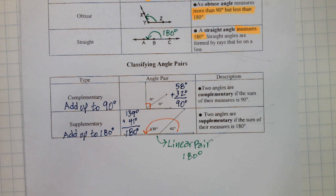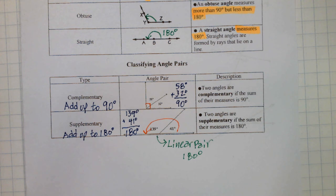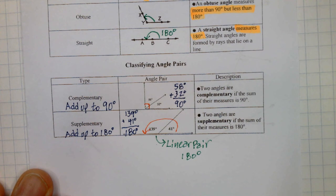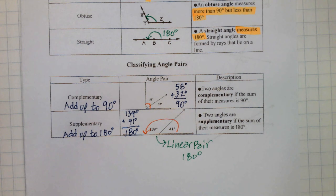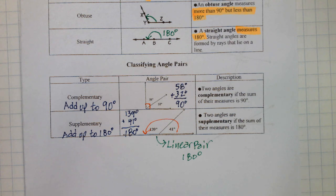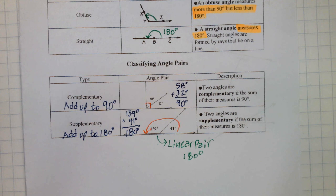The ones we're mainly going to use are complementary and supplementary. A little word association helps remember which is which: the C in complementary comes before the S in supplementary, and 90 comes before 180. So C goes with 90, and S goes with 180. That's a little trick that helps us remember which one goes with which.